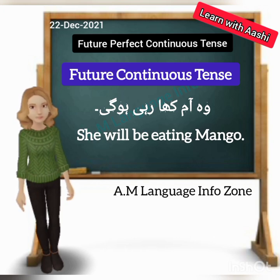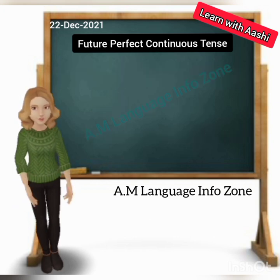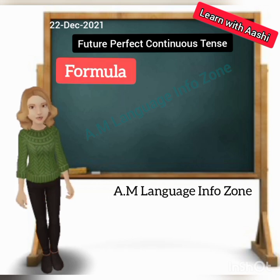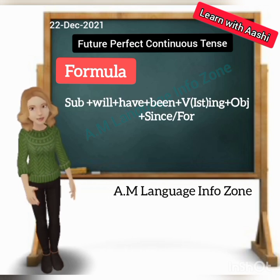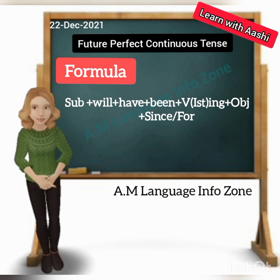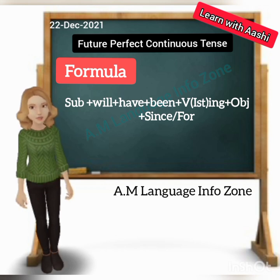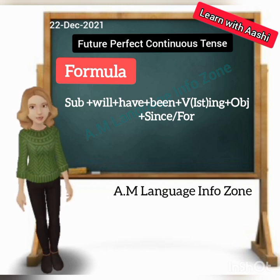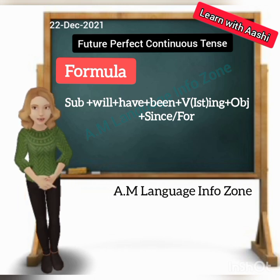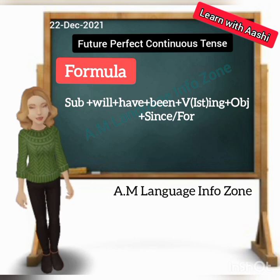Next, the formula for Future Perfect Continuous sentences: Subject + will + have + verb first form with -ing + object, in addition with either 'since' or 'for.' Only one of these — since or for — will be used. Students often get confused about where to use 'since' and where to use 'for.'